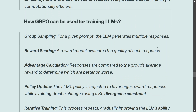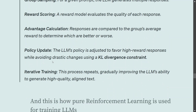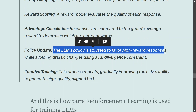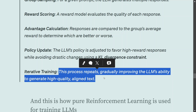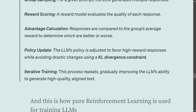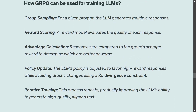For a given prompt, the LLM generates multiple responses — similar to group sampling. A reward model then evaluates the quality of each response. The advantage is calculated over this group of outputs by comparing responses to the group average reward to determine which are better or worse, and the policy is adjusted accordingly. The LLM policy is adjusted to favor high-rewarding responses. This process repeats iteratively, gradually improving the LLM's ability to generate high-quality, aligned text. The key takeaway: generate more samples, create a group, compute the cumulative reward, calculate the advantage, and use that advantage to update the policy algorithm — then repeat until you get the best results.